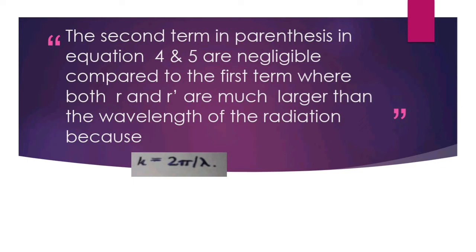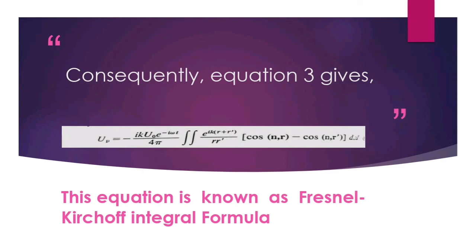Consequently, equation 3 gives the value of u_P as: u_P = −iku₀ e^(−iωt) / 4π × ∬ e^(ik(r + r′)) / (r·r′) · [cos(n,r) − cos(n,r′)] da. This equation is popularly known as the Fresnel-Kirchhoff integral formula, which we have derived using the Kirchhoff Integral Theorem. It is very important in optics.